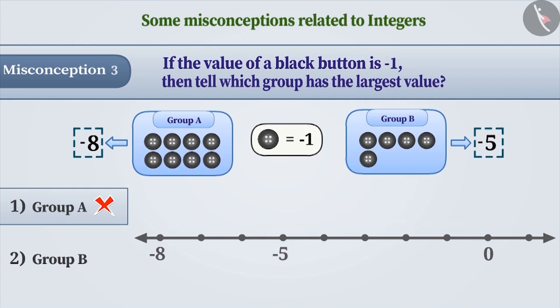As you can see, minus 5 is to the right of minus 8. As the value of the numbers on the right on the number line increases, so minus 5 is greater than minus 8.